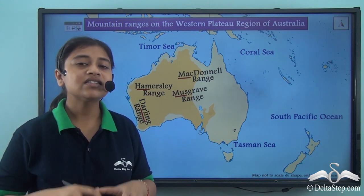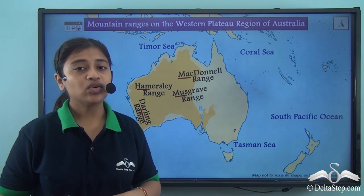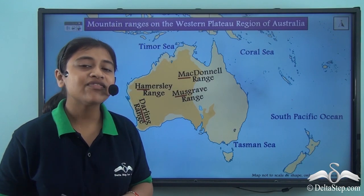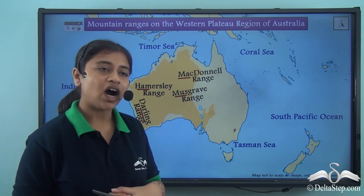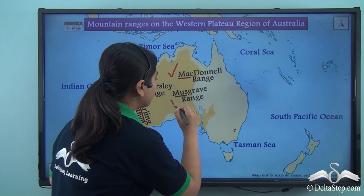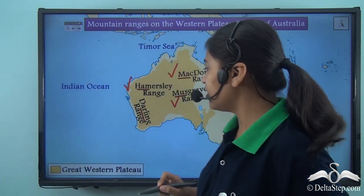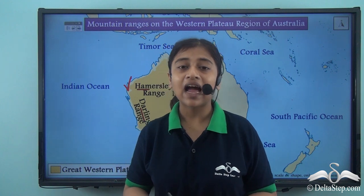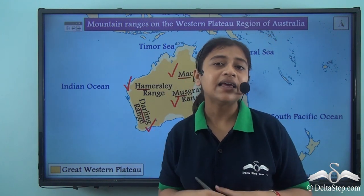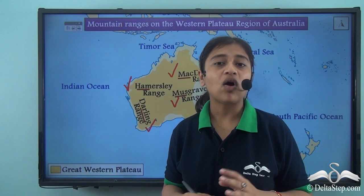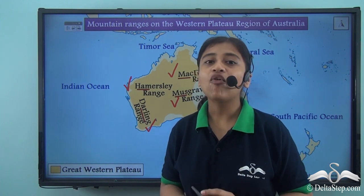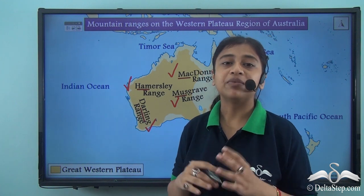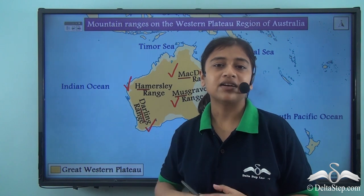In this region there are various mountain ranges that rise from the plateau. The most important ones are the McDonnell Range, the Musgrave Range, the Hammersley Range, and the Darling Range. These mountain ranges are not as high as the Himalayas because the Himalayas are young fold mountains of recent origin, whereas these ranges have been present for a very long time and are relatively older.